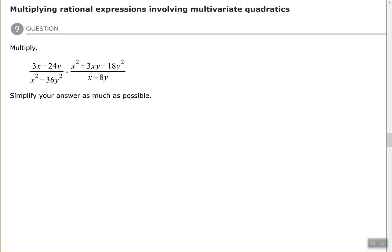Hey, good people. Arthur Morris here. I hope all is well. In this video we're going to look at multiplying rational expressions involving multivariate quadratics, so that just means we have more than one variable within the expression.